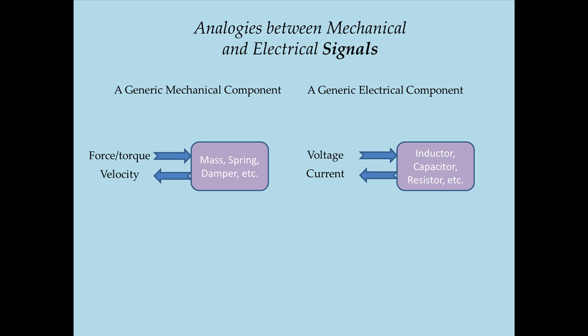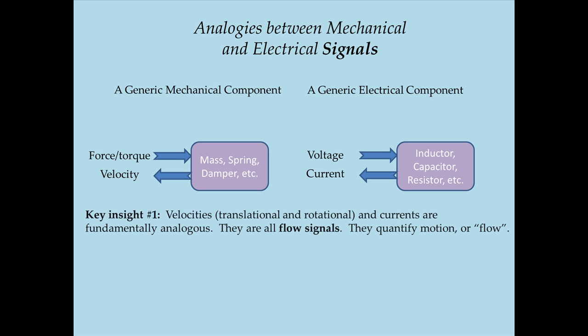When you look at these two diagrams, you begin to see three key insights. The first fundamental insight is that there is an analogy between the motion of masses, springs, and dampers and the motion of electrons. They are both motions — both flows in a broad sense. In other words, velocities — translational or rotational — and currents are fundamentally analogous. They are all flow signals that quantify motion.